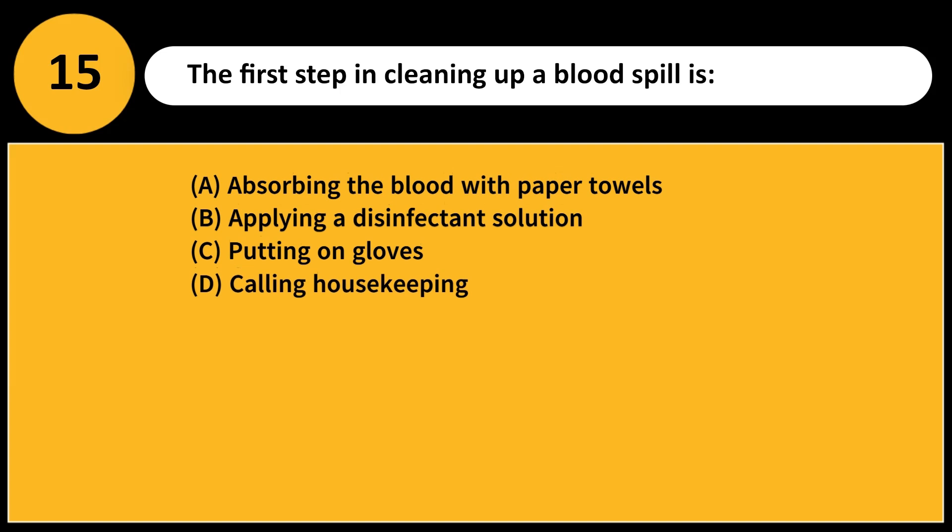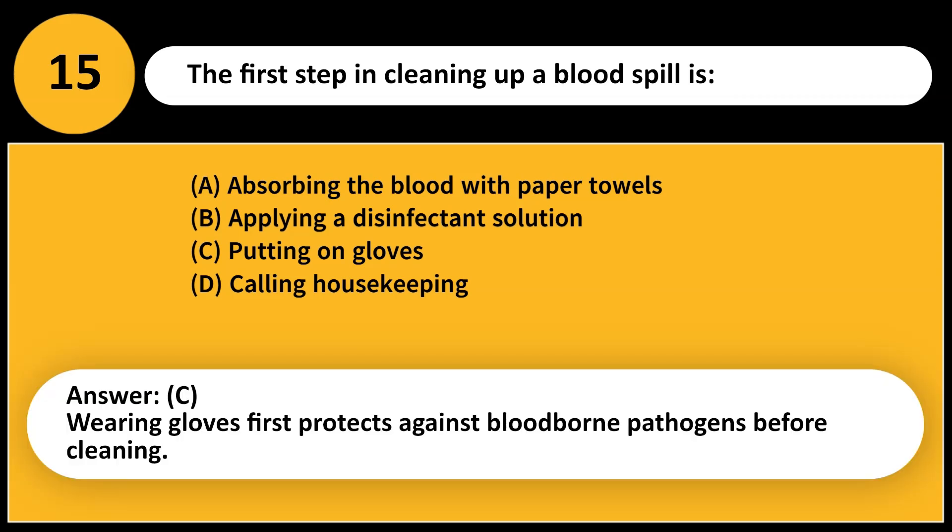The first step in cleaning up a blood spill is: A. Absorbing the blood with paper towels. B. Applying a disinfectant solution. C. Putting on gloves. D. Calling housekeeping. Answer: C. Wearing gloves first protects against blood-borne pathogens before cleaning.